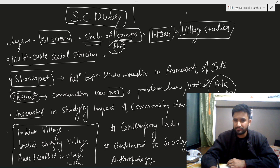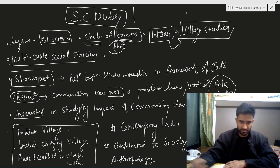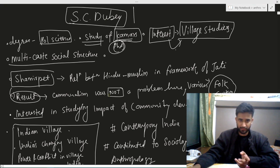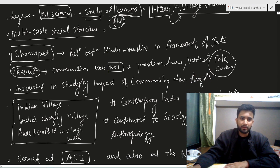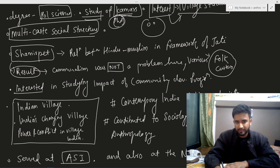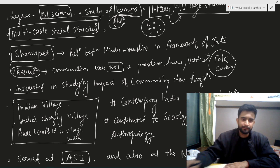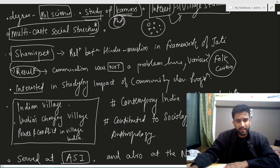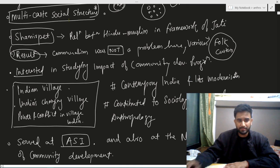SC Dube was basically interested in village studies. Don't confuse him with SC Roy — we have another video on that. He was very much interested in multicast social structure — meaning if a village has around 10 to 15 castes, how they interrelate. To study this, he went and studied Shamirpet.